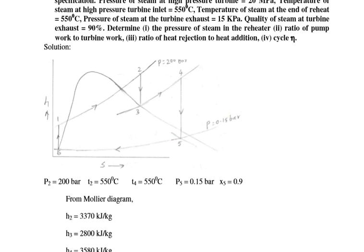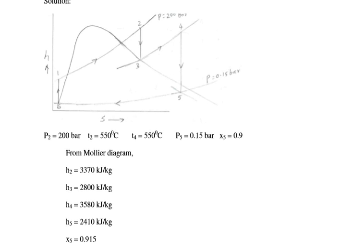Draw the H-S diagram with the saturation curve and locate points 1 to 2, 2 to 3, 3 to 4, 4 to 5, and 5 to 6. Given: P2 = 200 bar, T2 = 550°C, T4 = 550°C, P5 = 0.15 bar, X5 = 0.9. From the Mollier diagram: H2 = 3370, H3 = 2800, H4 = 3580, H5 = 2410 kJ per kg, and X5 = 0.915. P3 = P4 = 28 bar.